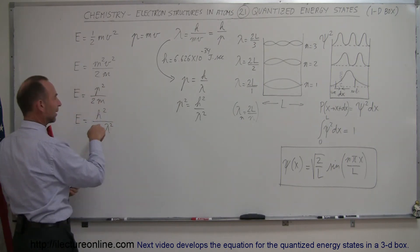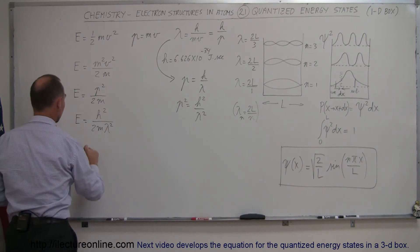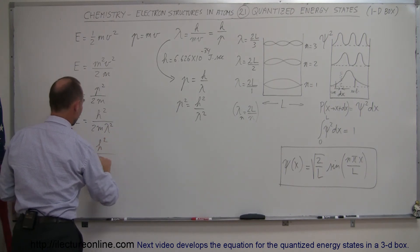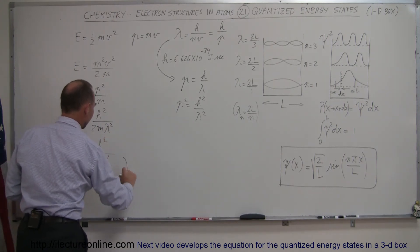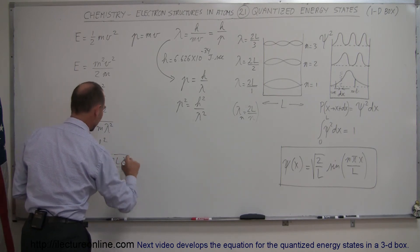I want to go over here. I want to write lambda squared is equal to 2l over n quantity squared. So this becomes equal to h squared divided by 2m. And instead of lambda, I'm going to write 2l divided by n and I have to square that.